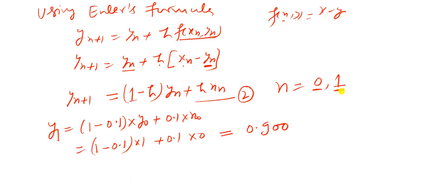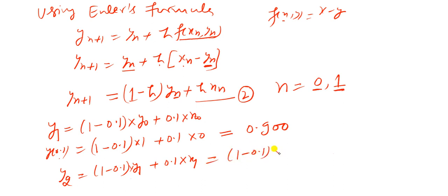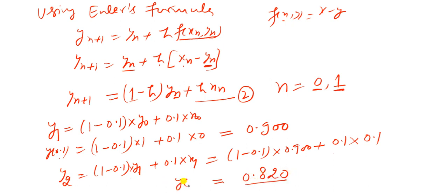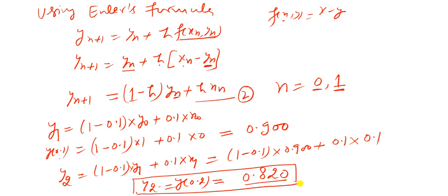Putting n = 1 in equation 2, where y1 = y(0.1), we compute y2 = (1 - 0.1) * y1 + 0.1 * x1 = (1 - 0.1)(0.900) + 0.1(0.1). Simplifying with the calculator, we obtain y2 = 0.820. So 0.820 is the value of y at x = 0.2, denoted by y2.